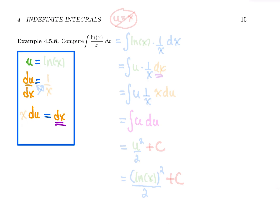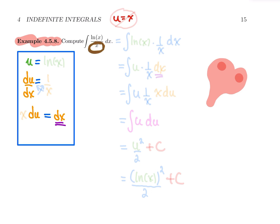My next example is one of my favorites. We want to integrate ln of x over x, dx. You might be tempted to use u equal to x or the denominator, but if you substitute u equal to x and do it correctly as a fun exercise, you'll see the integral simply becomes the integral of ln u over u du — you're just changing the letter, not the problem. So a key remark: u is never going to be just x; it needs to be some formula that depends on x.